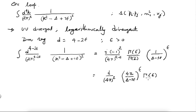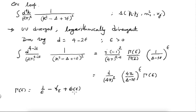How does Γ(z) behave when z → 0? Γ(ε) behaves as 1/ε − γ_E + terms of order ε, where γ_E is the Euler–Mascheroni constant, which is approximately 0.5772. So you see that it is singular, and the behavior is precisely 1/ε − γ_E.